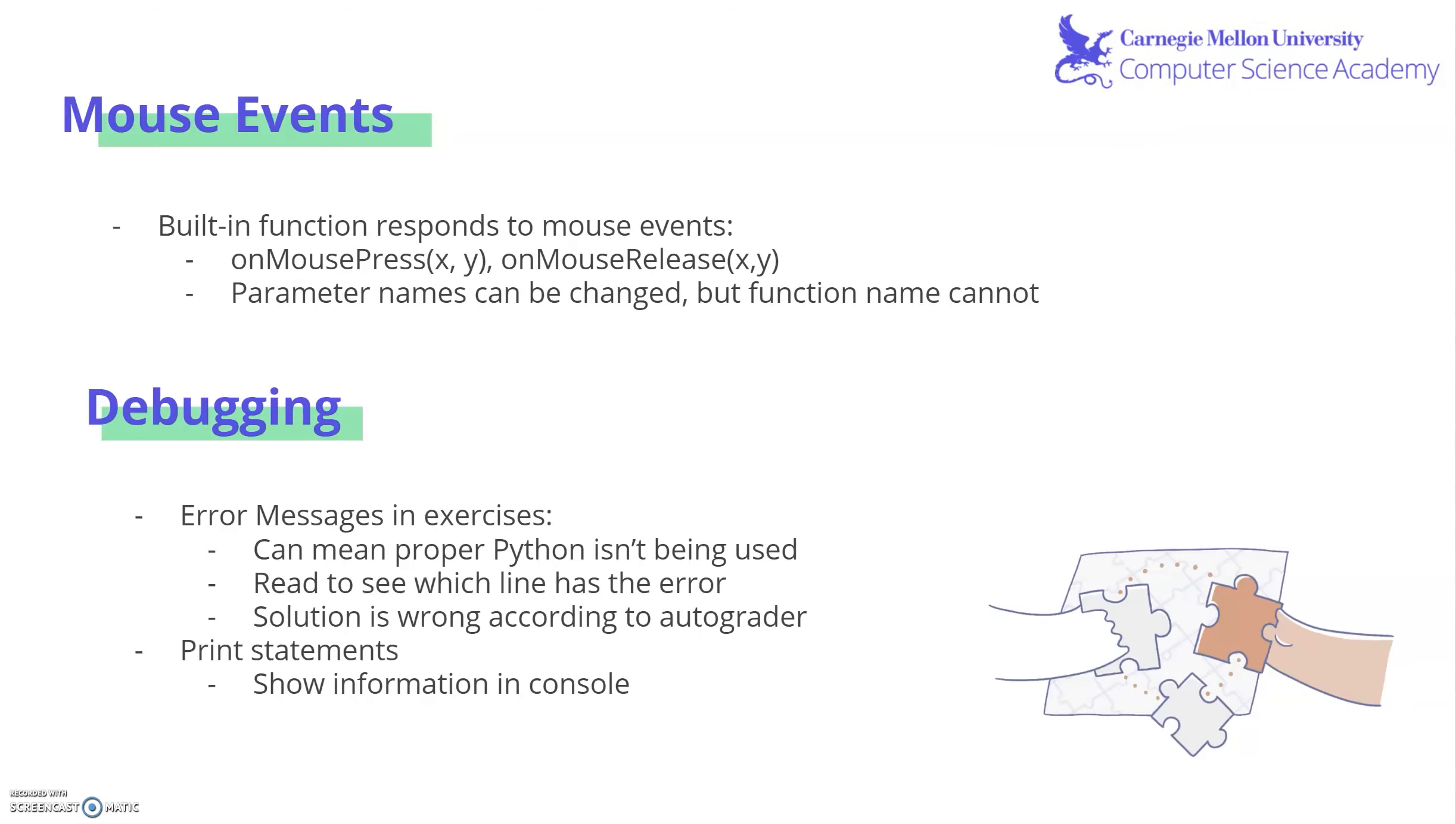CS Academy also has some built in functions that you can use. For example, if you want the user to be able to interact with your canvas, such as clicking on things, you can call two functions called onMousePress or onMouseRelease. So onMousePress, every time someone clicks, you can cause a certain event to happen. With onMouseRelease, every time they stop clicking, you can also have different events happen.